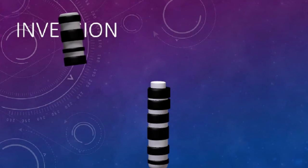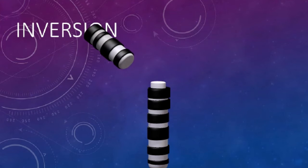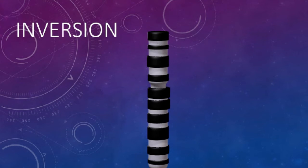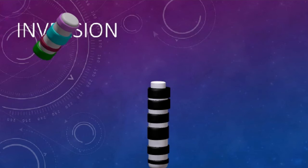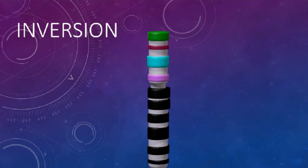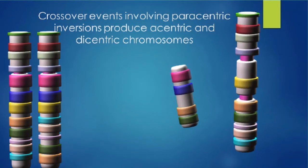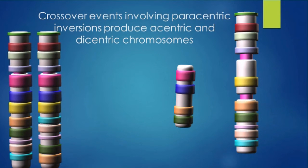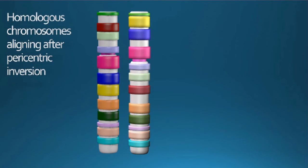If a chromosomal portion is broken and then reattached to the original chromosome after rotating 180 degrees, all of the same genes would be present but in a different position along the chromosome. This could affect gene activity, since some regions of the chromosome may be more active than others, and also affect gamete formation, because crossing over between chromosomes which have suffered inversions can lead to non-functional gametes.